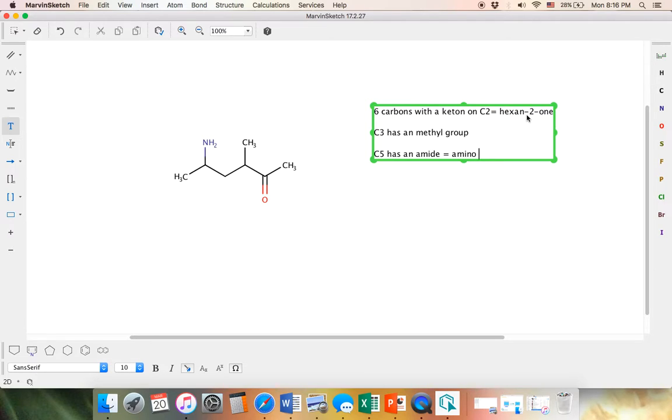And so what is this going to be when we bring it all together? And so we have hexane, two, one. And we know from our organic one that we have to do this in alphabetical order, not necessarily in the order of which carbon it is. And so we're going to have 5-amino, because A comes before M, 3-methylhexan-2, because our ketone's on carbon two. One, spelled like one, but is indicative of the ketone.